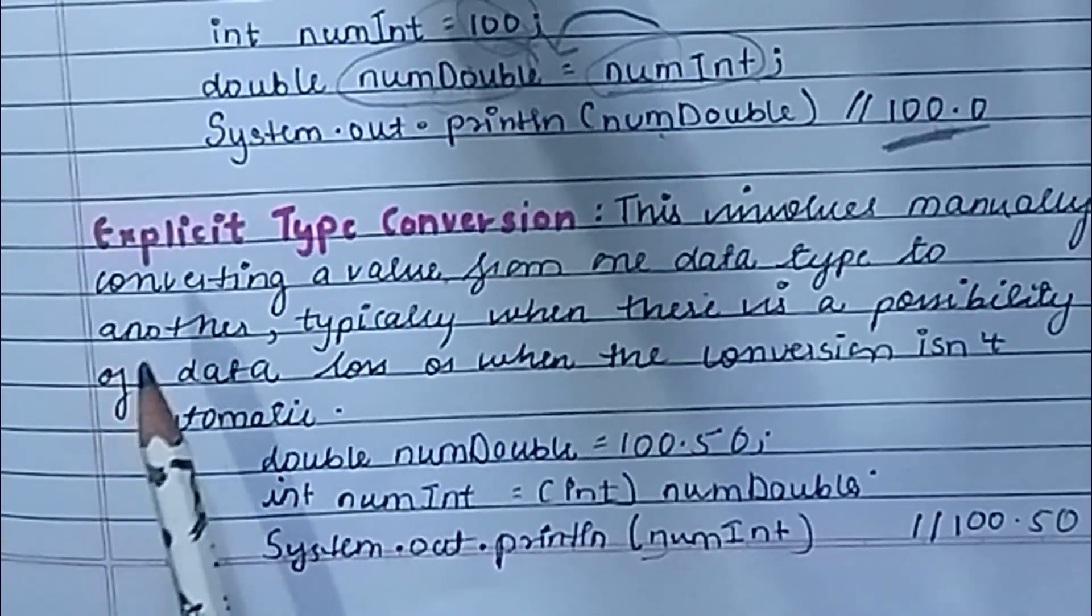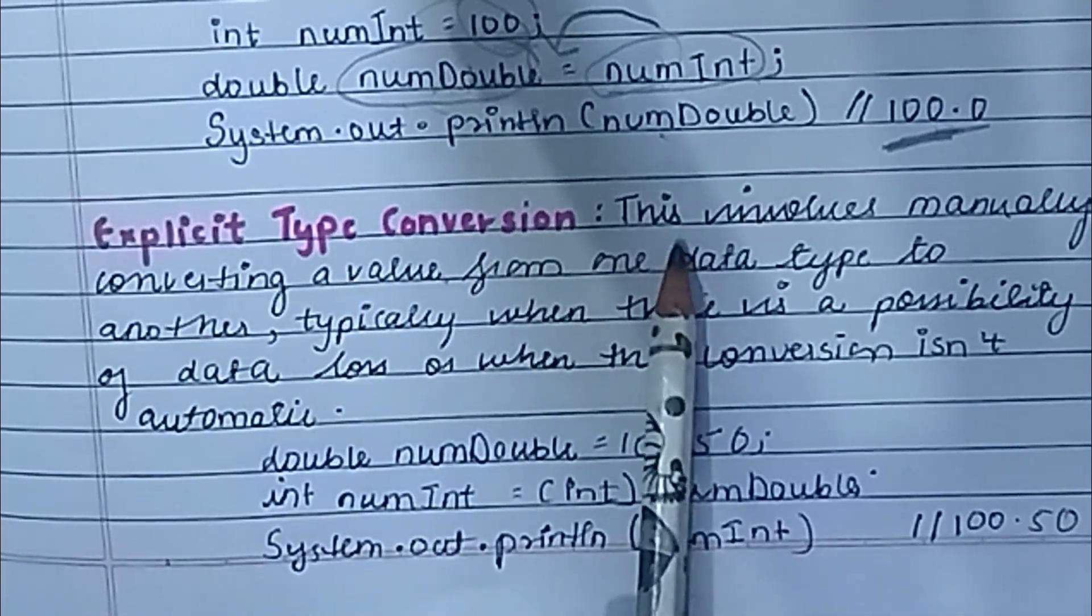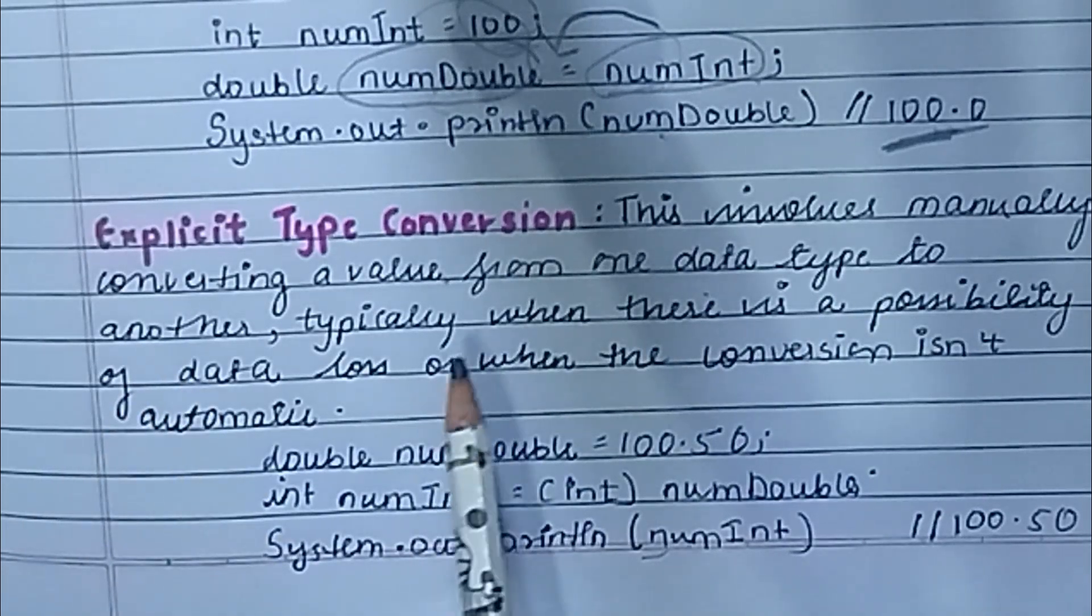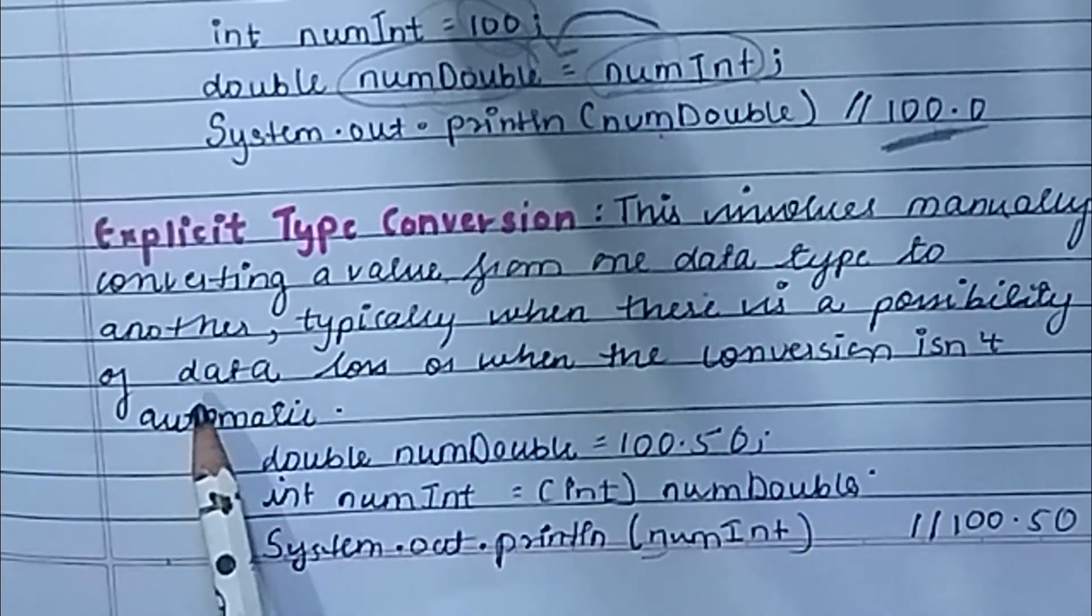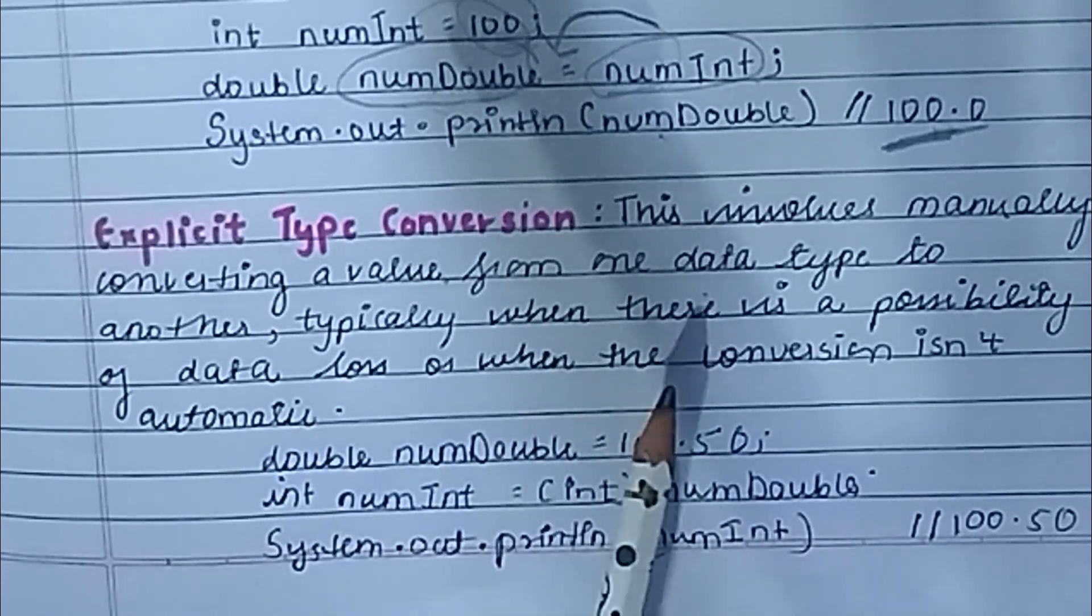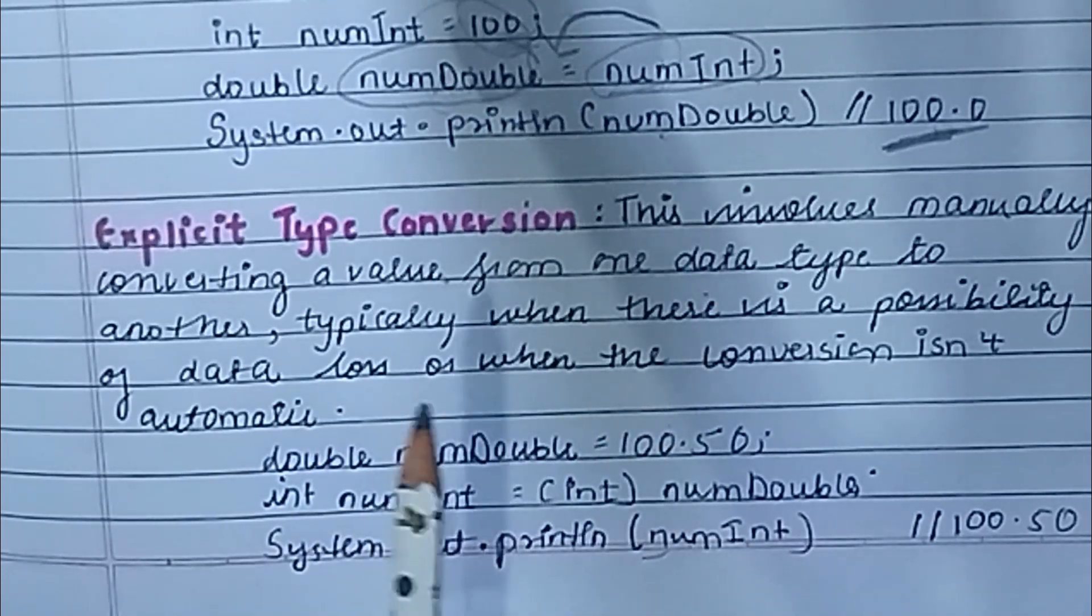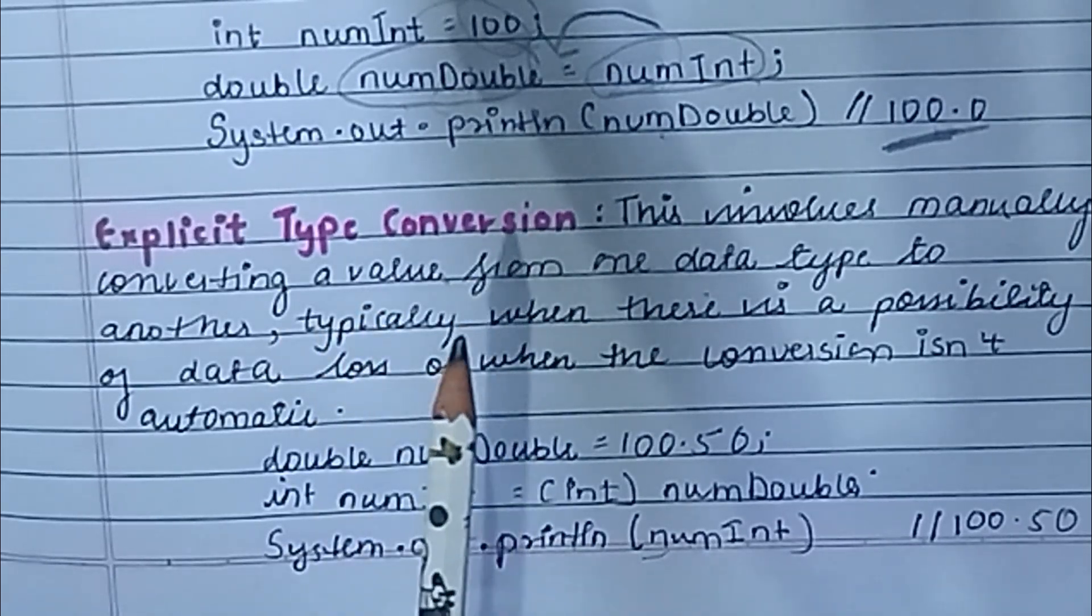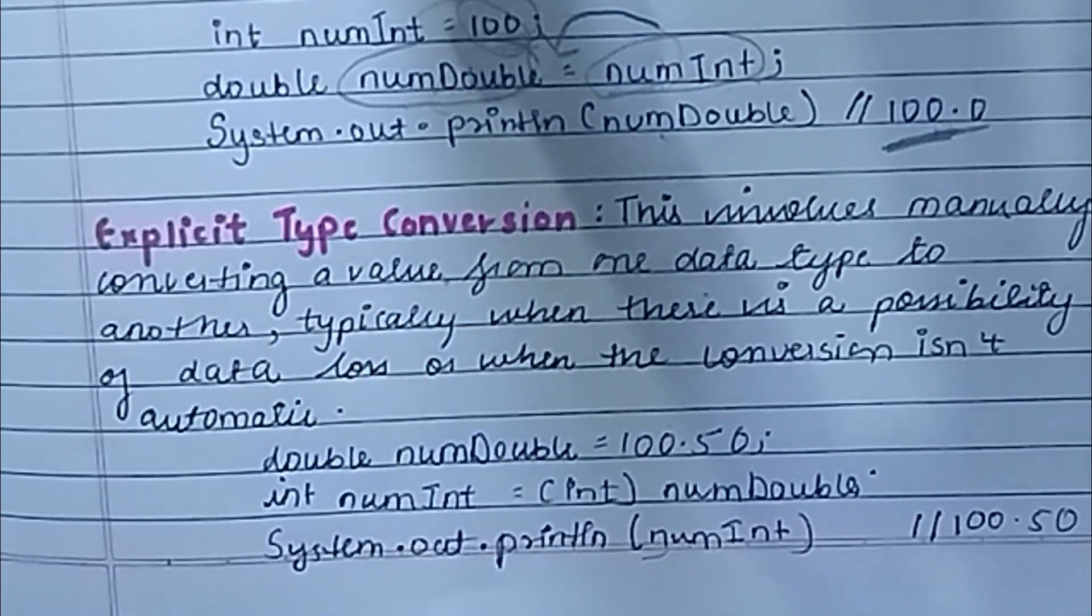Next is explicit type conversion. This involves manually converting a value from one data type to another, typically when there is a possibility of data loss or when the conversion isn't automatic. In implicit, we saw there is no data loss, but in explicit, data loss may be possible because we are manually converting.